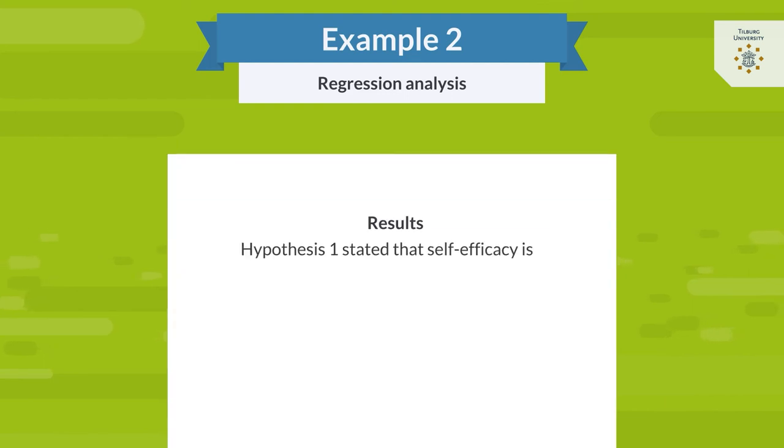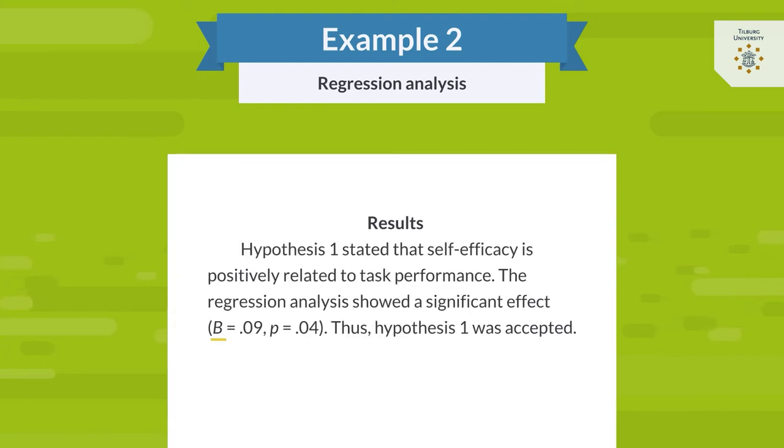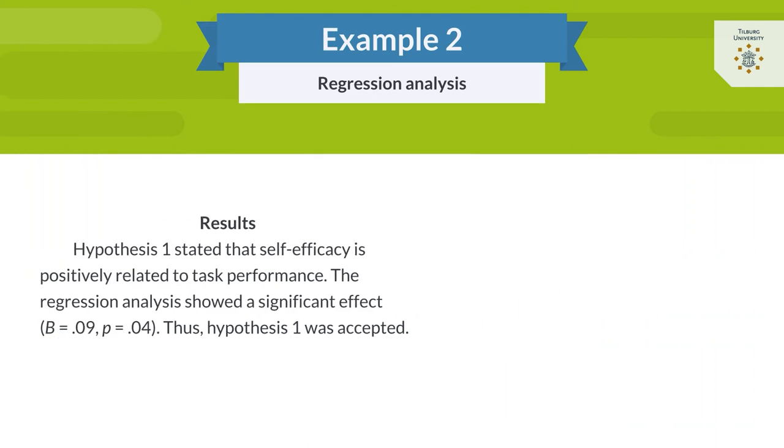Our result of interest here is the b-coefficient, which is 0.09, as well as our p-value, which is 0.04. b is the unstandardized regression coefficient, p refers to the level of significance of our findings. Please note that you have to report the exact p-value up to three decimals.